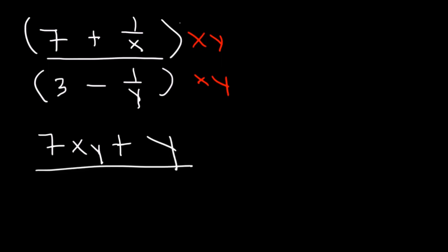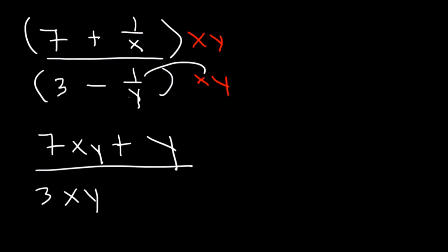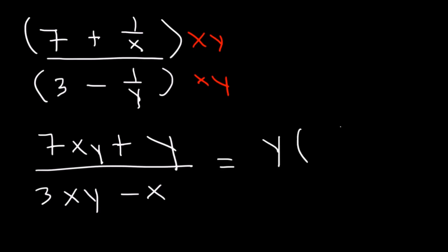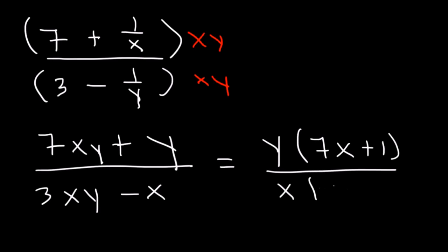On the bottom, we have 3 times xy. And then 1 over y times xy — y will cancel — leaving behind x. The last thing we can do is factor. In the numerator, we can take out the GCF, which is y, and that will leave us with 7x plus 1. In the denominator, we can take out an x, which will leave us with 3y minus 1. And so that's the answer for this problem.